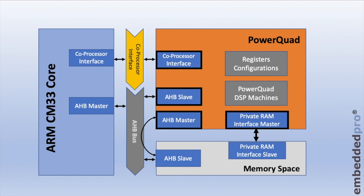The memory interfaces are very important for Power Quad. The Cortex-M33 core uses its dedicated 64-bit bus to interface to the Power Quad via the coprocessor interface. The Power Quad is also a memory-mapped peripheral available through the AHB bus, so the AHB master on the core can communicate with it through the AHB slave interface — just like any other peripheral. Complex DSP algorithms are heavy on memory usage, so the Power Quad has a dedicated private RAM interface. Lastly, the Power Quad is an AHB master in its own right and can access the memory space for RAM reads and writes.